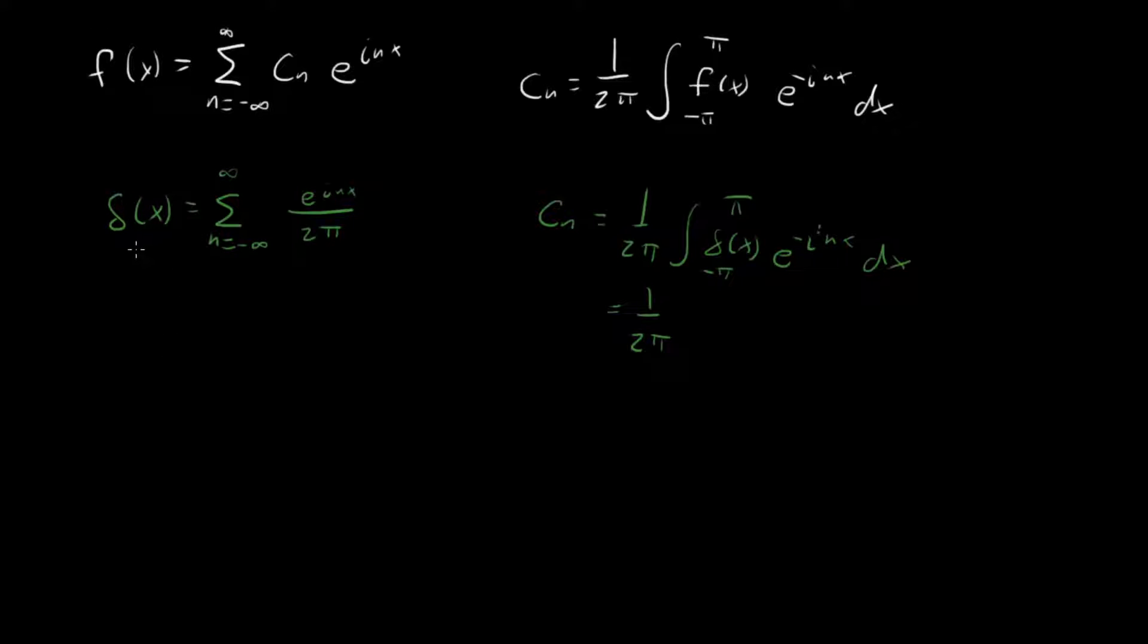We're going to have one at 0, we're going to have one at 2 pi, one at minus 2 pi. So another way of writing this, which makes explicit this implicit minus pi to pi periodicity,